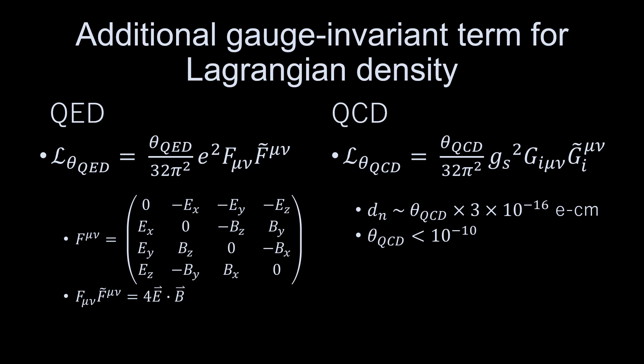The Lagrangian density for quantum electrodynamics could in principle be supplemented by an additional gauge invariant term lambda-theta-QED, where theta-QED is a dimensionless constant and the dual-field strength tensor F-tilde is obtained by interchanging E and B.